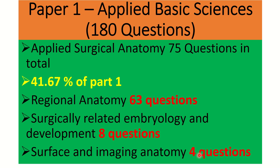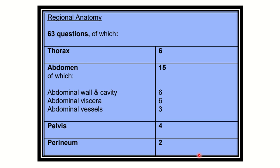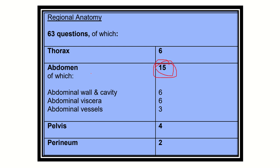Now let's see the details of the anatomy syllabus. In regional anatomy — which is 63 marks — the thorax carries 6, abdomen 15, pelvis 4, and perineum 2. We can see that the abdomen has the greatest share with 15 marks, covering the abdominal wall and cavity, abdominal viscera and vessels. Viscera, vessels, and the abdominal wall are equally important for the abdomen portion of the anatomy syllabus.